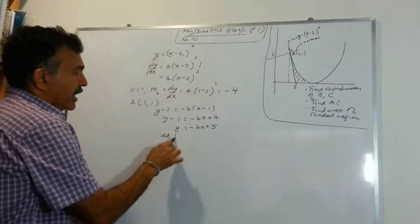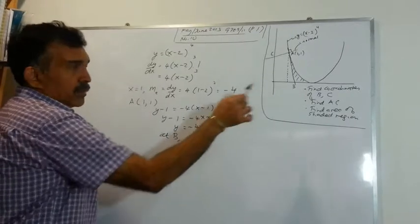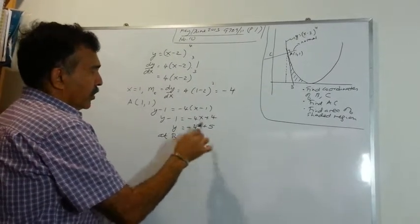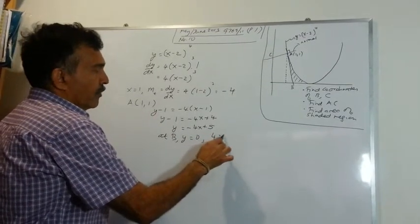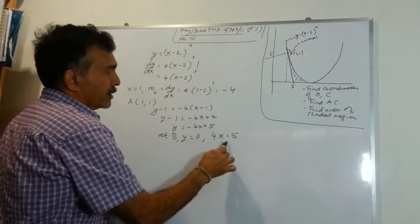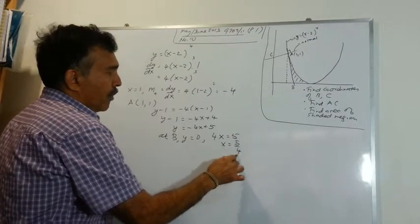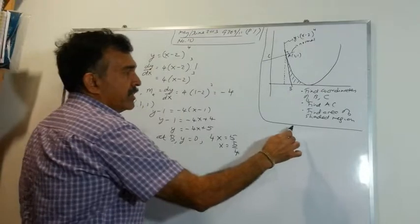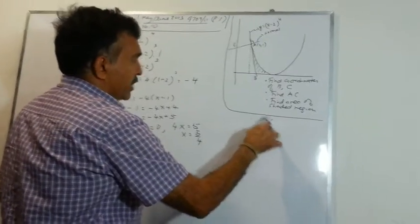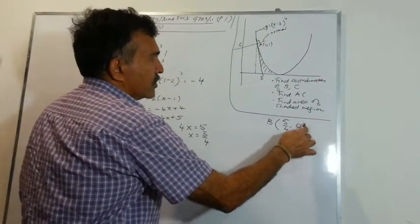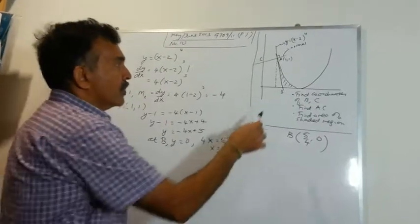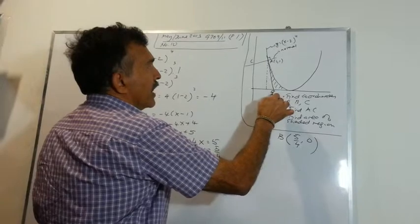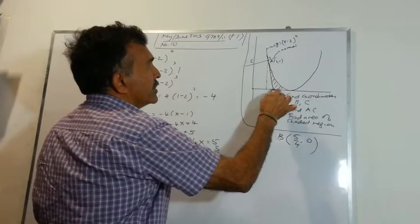We know B is on the x-axis, so y equals 0. Plugging in y equals 0, we get 4x equals 5, so x equals 5 over 4. Therefore the coordinates of B are (5/4, 0).